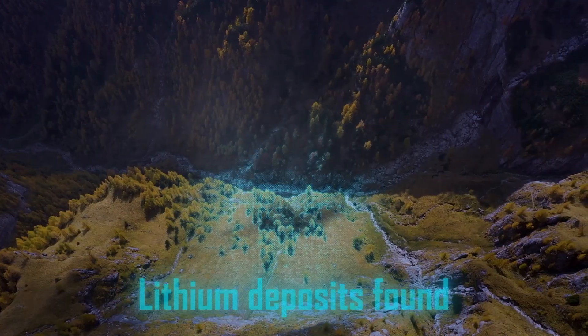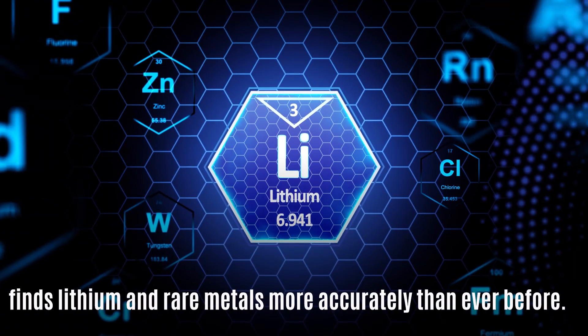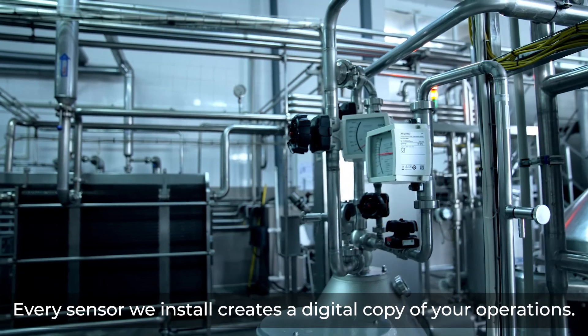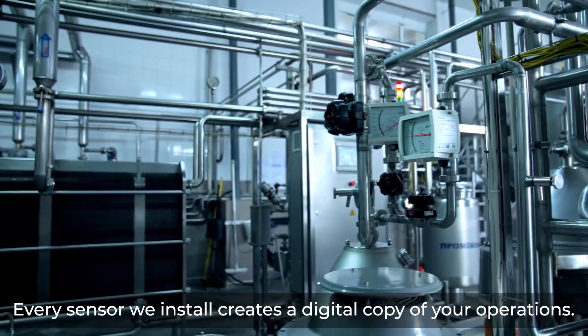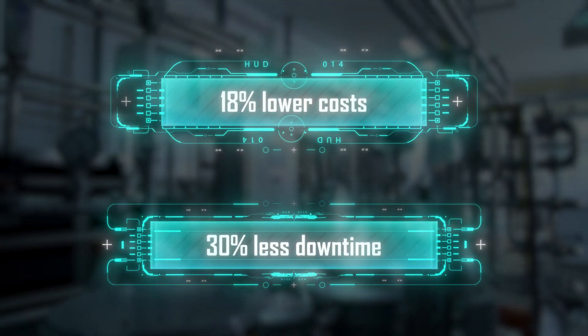It starts underground. Our AI uses satellite data to find lithium and rare metals more accurately than ever before. Every sensor we install creates a digital copy of your operations. This means 18% lower costs and 30% less downtime.